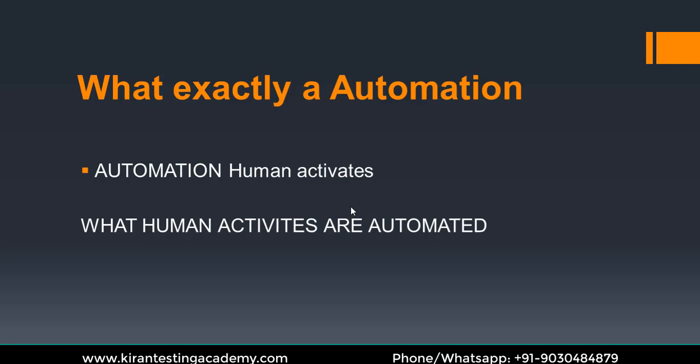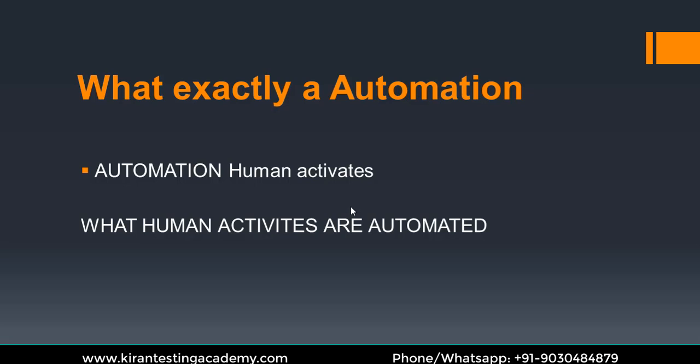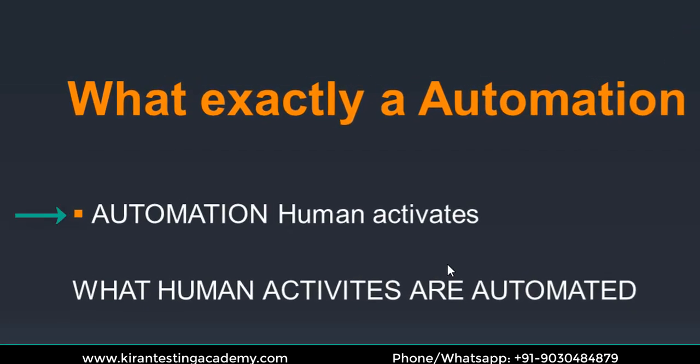Let's start from the very scratch. What is automation in general? Automating human activities by some external force is called automation, in whatever field it may be. Similarly, whenever manual testing activities are automated by some external force like an automation testing tool, we call that process automation testing — human activities are automated.